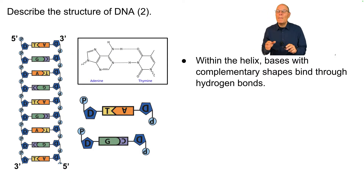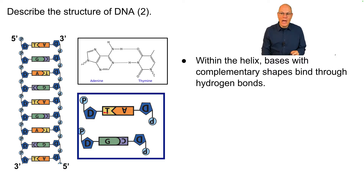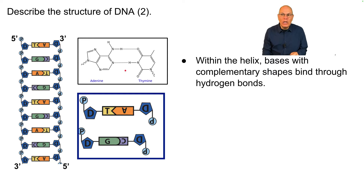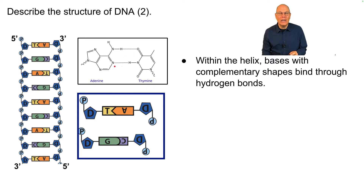Within the helix, bases with complementary shapes bind through hydrogen bonds. Thymine is complementary to adenine, and guanine is complementary to cytosine. In the case of adenine and thymine, you can see the hydrogen bonds that form between the oxygen, the hydrogen, and the nitrogen.